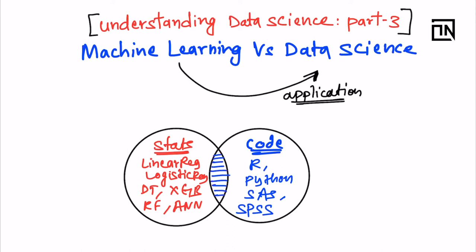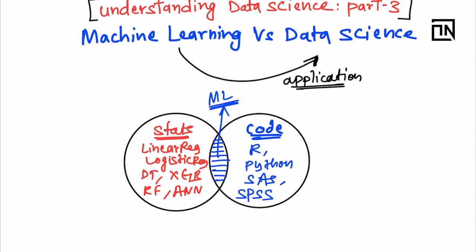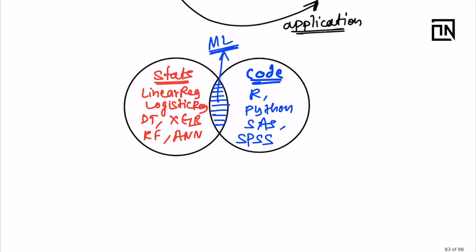This interaction is known as machine learning, and when you use machine learning to solve a business problem, when you apply machine learning to a domain, then what you are doing is data science.